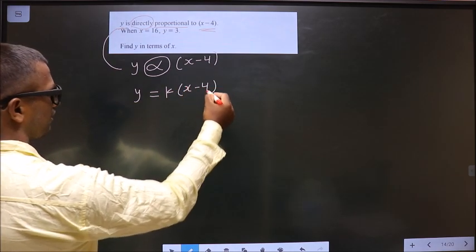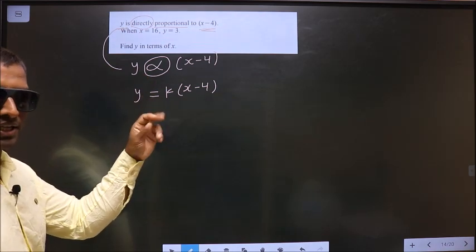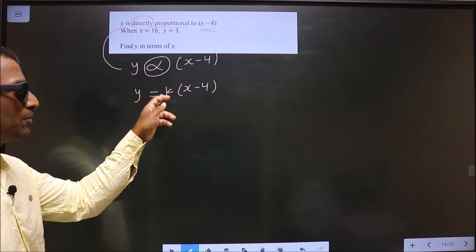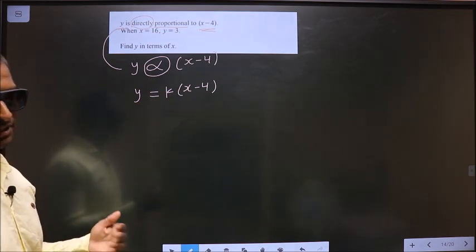Did you understand? To remove this proportionality and replace it with equal to, whenever we are doing that, we should put a constant k. It is a rule. Okay, next.